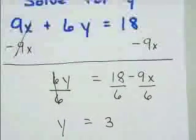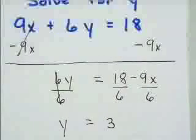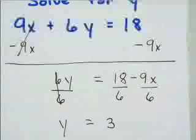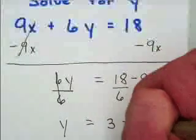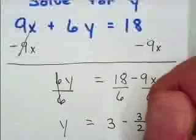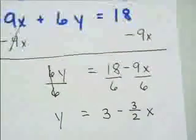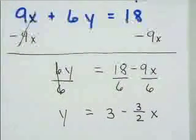y equals 18 divided by 6 is 3. And we've got a fraction, 9 divided by 6. We might want to leave this in fraction form. 9 over 6 reduces down to 3 over 2, so minus 3 over 2x. And there's my reduced form.